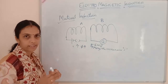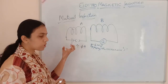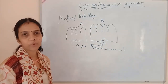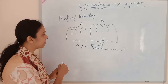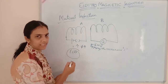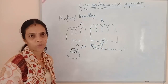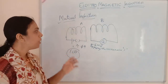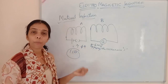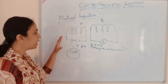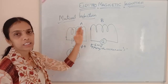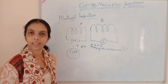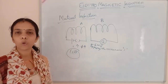That EMF will oppose the decrease in current, meaning it will try to help maintain the current. The time required for the current to become zero will be increased, opposing the decay of current in the other coil. This property is called mutual induction — when current in one coil changes, an EMF is induced in the other coil which opposes the increase or decrease in current in the first coil.